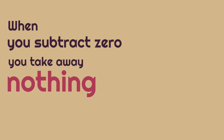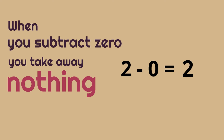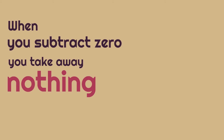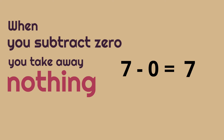Here's our first one: two minus zero. What would that be? It would be two, because when you subtract zero it takes nothing away. Two minus zero is two. How about this one? Seven minus zero. What would that be? It would be seven, because you're taking nothing away. Seven minus zero is seven.